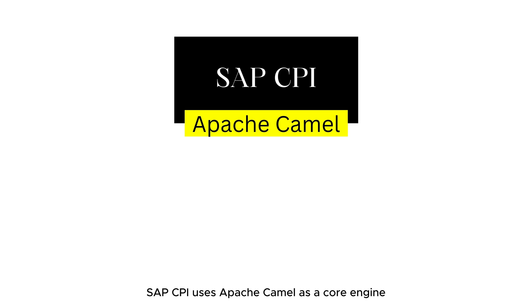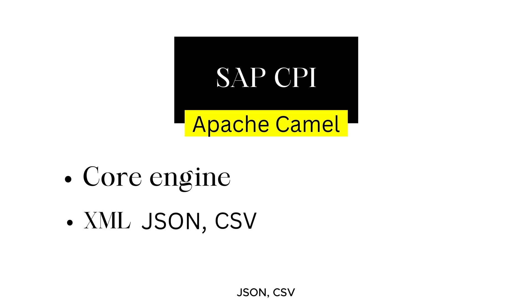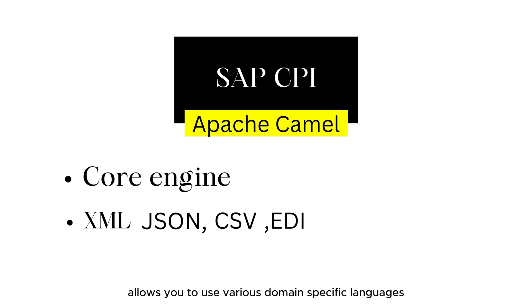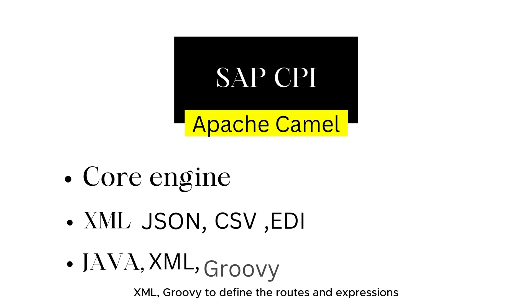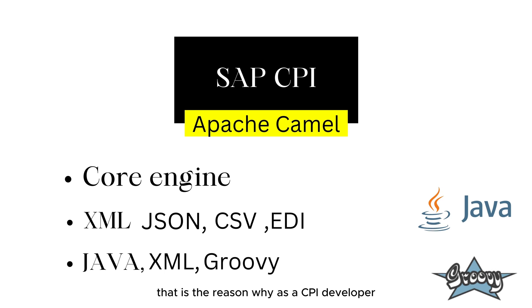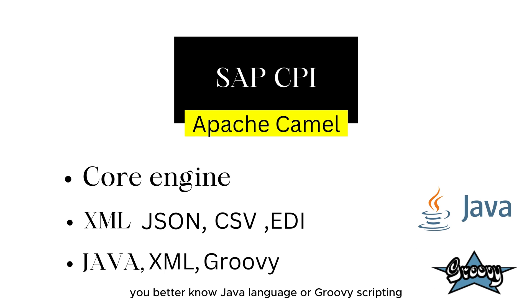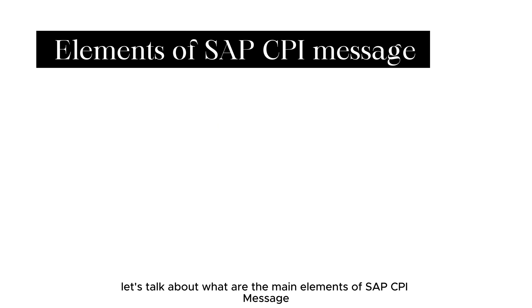SAP CPI uses Apache Camel as a core engine to process messages of any format such as XML, JSON, CSV, EDI and other formats. Apache Camel allows you to use various domain-specific languages such as Java, XML, and Groovy to define routes and expressions. That is the reason why as a CPI developer you should know Java language or Groovy scripting to better work with SAP CPI components.